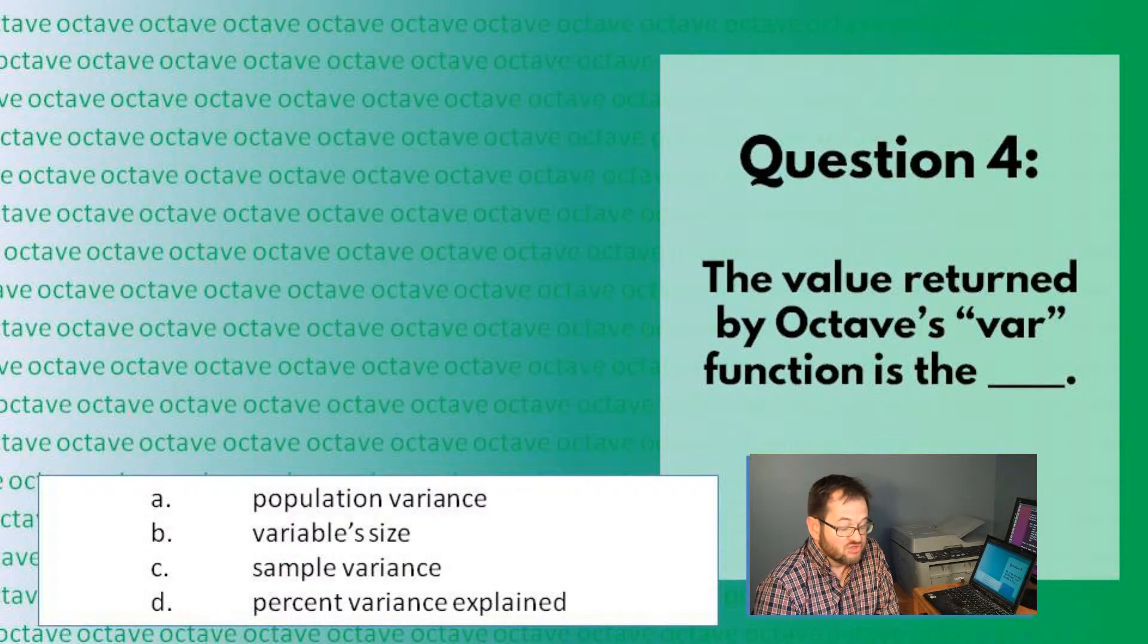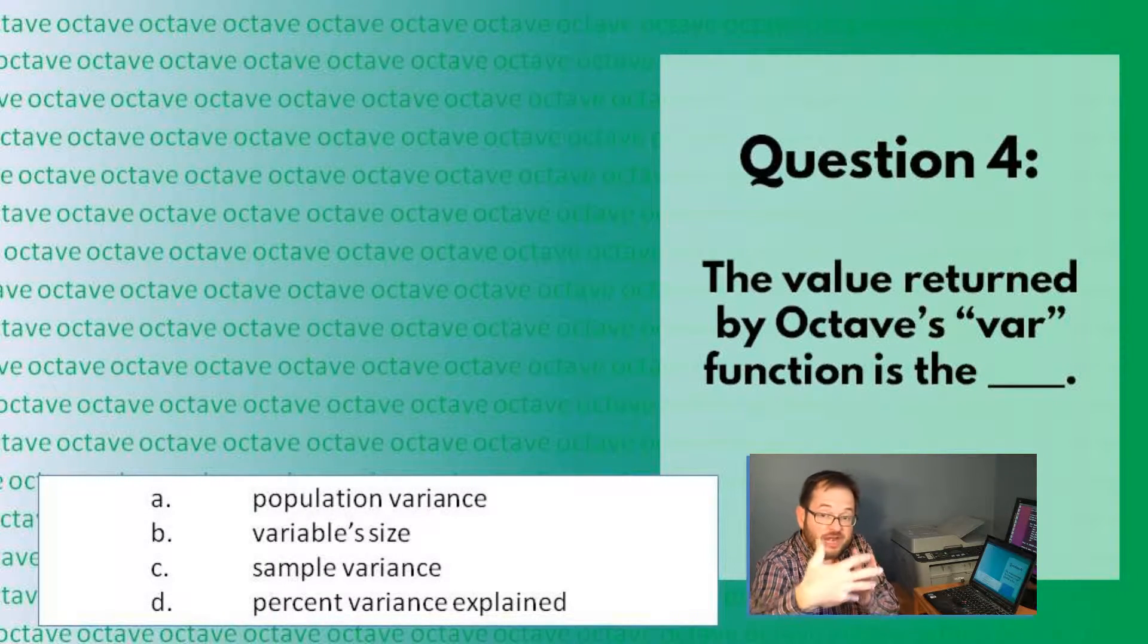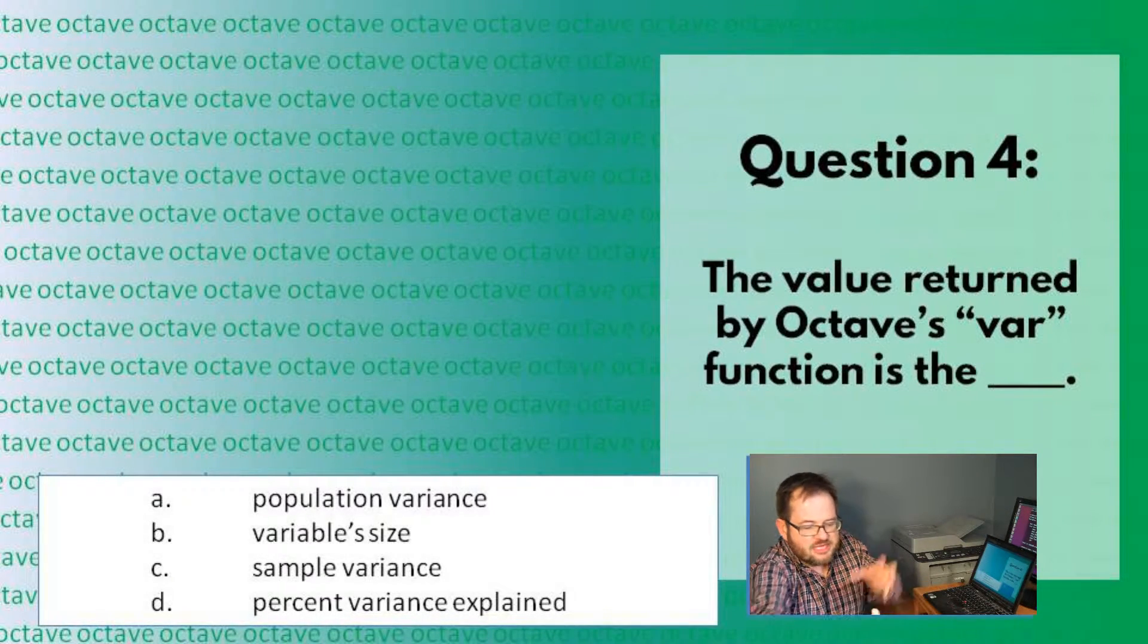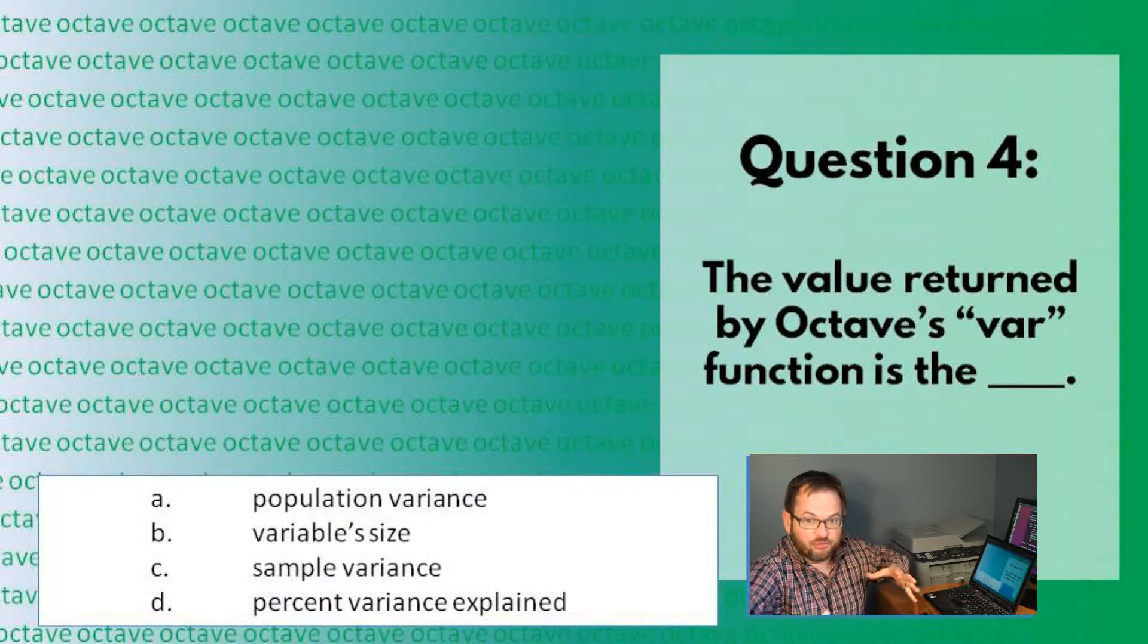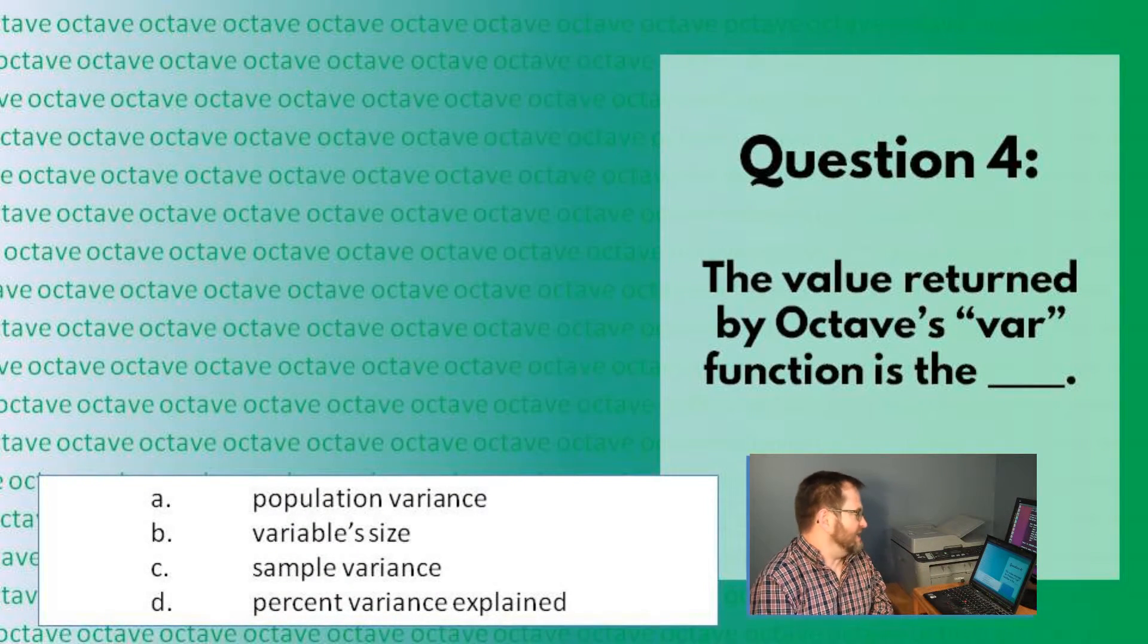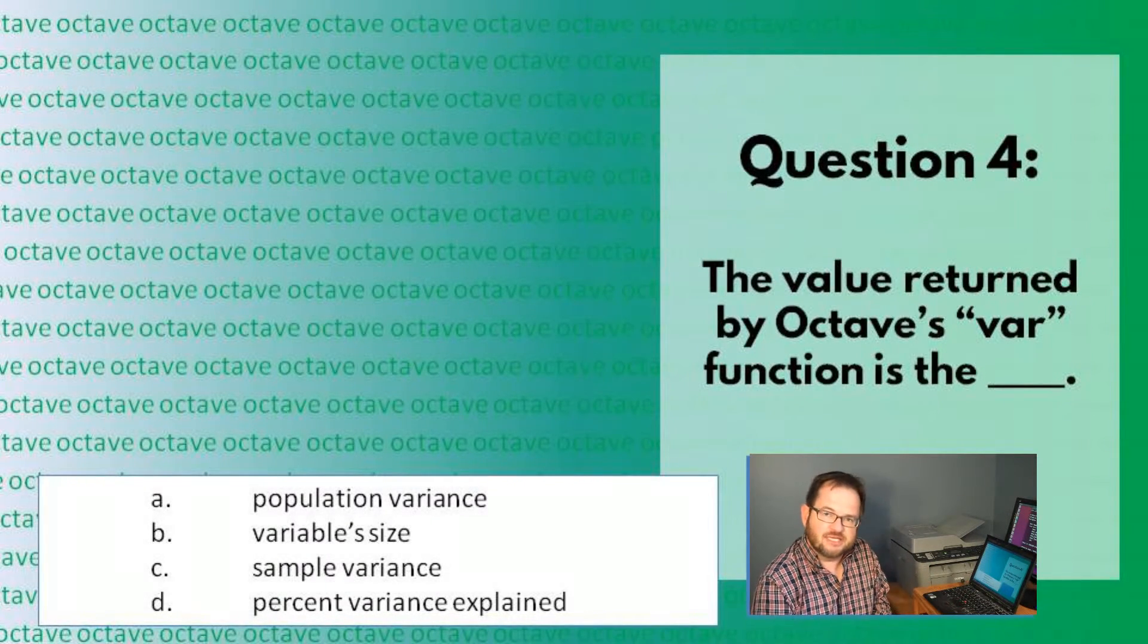That's in contrast to a population variance, which is a parameter that describes the variance, the spread in the data. The variable size and percent variance explained are not actually related to this concept.